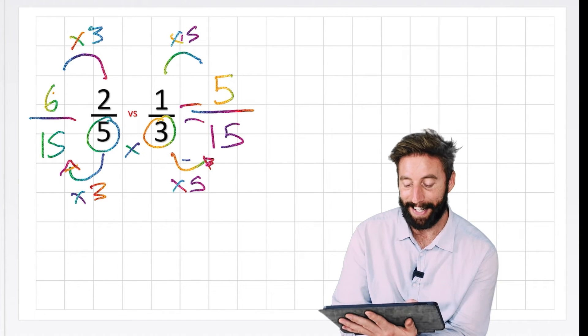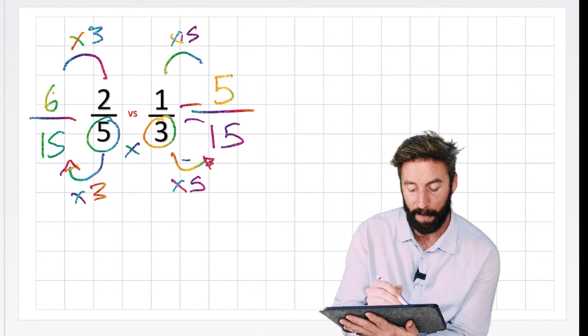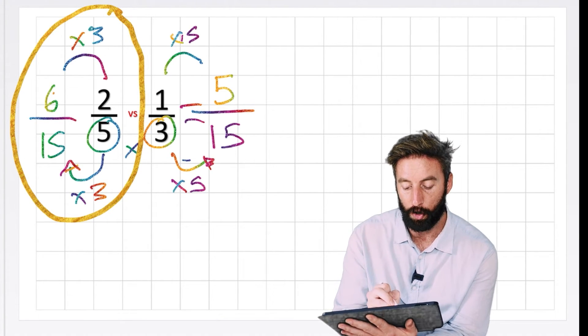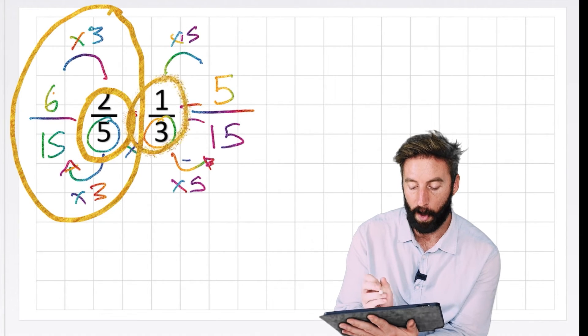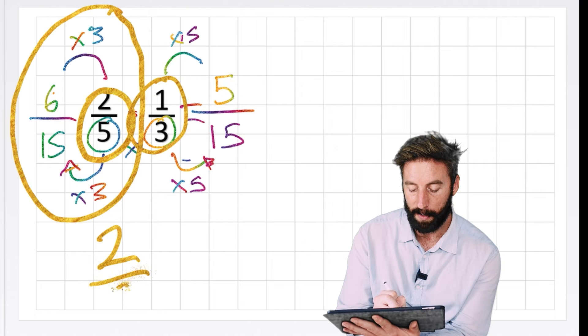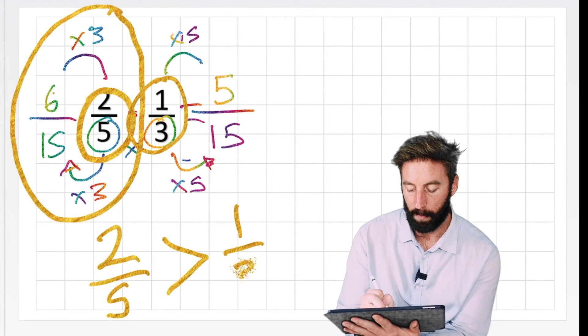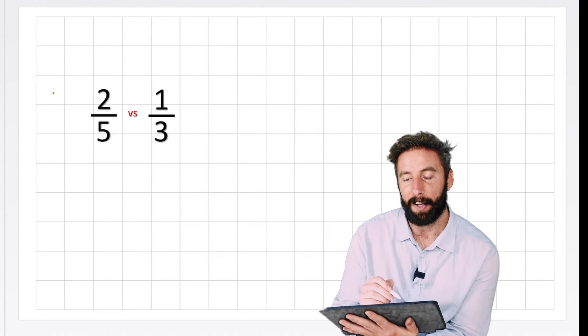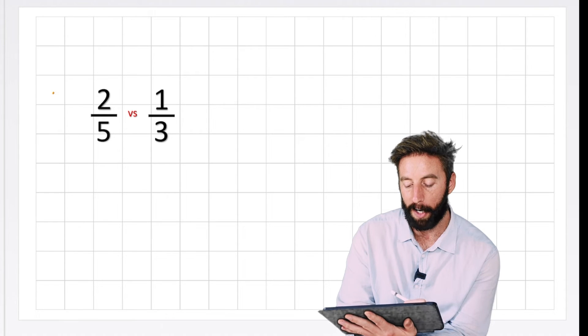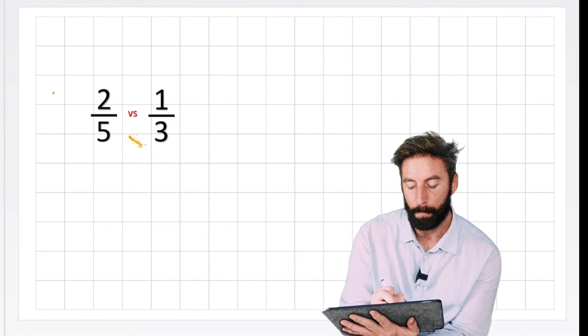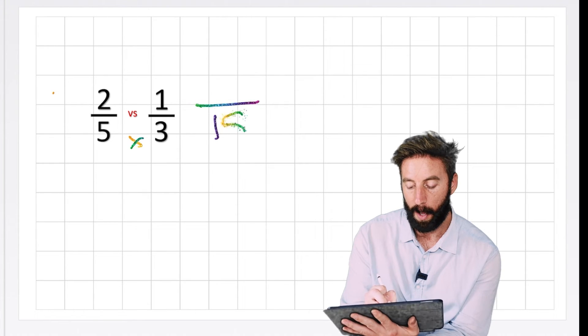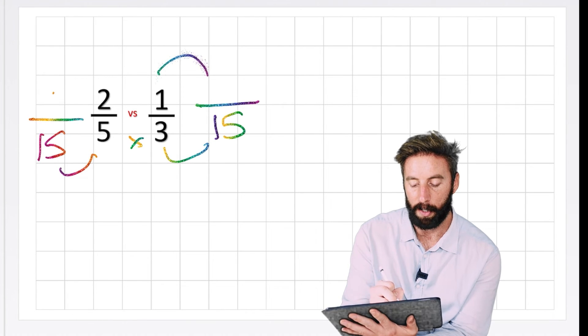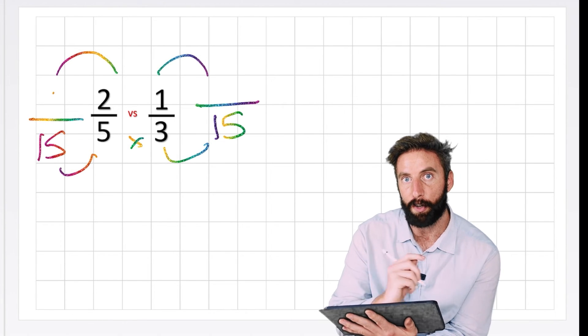OK, so now I'm at this point. I can clearly see again that I have 6 fifteenths or 5 fifteenths. Therefore, my 6 fifteenths has the greater value. 2 fifths has a greater value than 1 third. So I would write it like this: 2 fifths is greater than 1 third. I'd give myself a nice big shiny gold tick. So there's a sneaky little trick, isn't there? We can look at our two fractions, and rather than trying to work out which is the lowest common multiple, I can just multiply them together, and it will give me a multiple that I can use. And then whatever I do to that denominator, I have to then do to the numerator. That's a really useful trick.